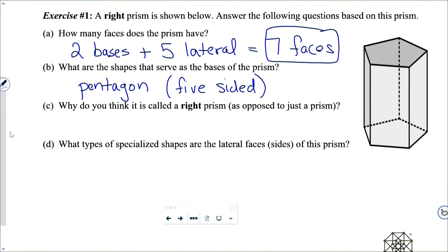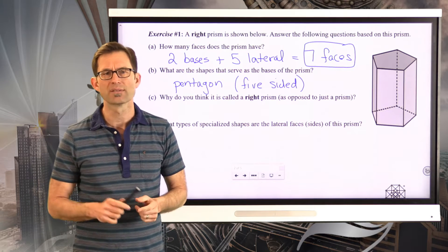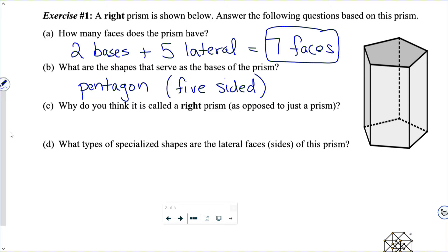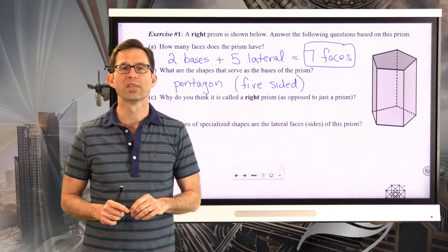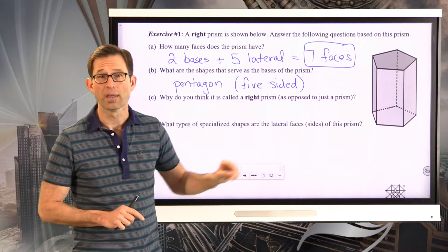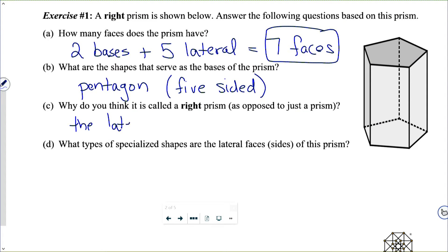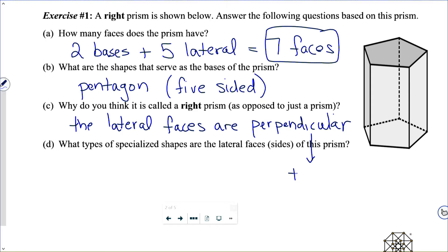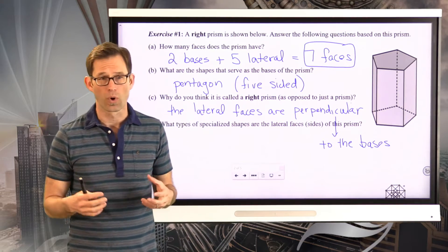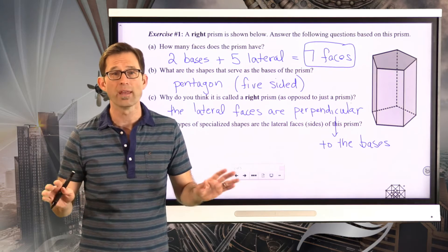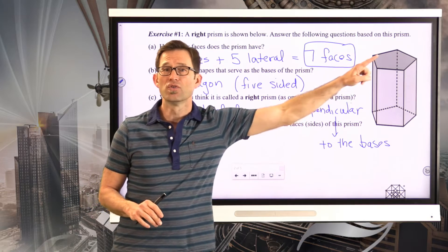For letter C: why is it called a right prism as opposed to just a prism? The word "right" generally implies that something perpendicular is going on. Specifically, in a right prism, the lateral faces are perpendicular to the bases. These are the easiest type of prisms to work with, and when we do volume of prisms, we'll confine ourselves to right prisms.